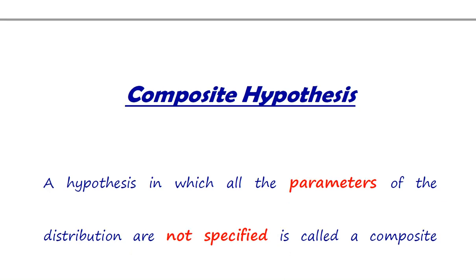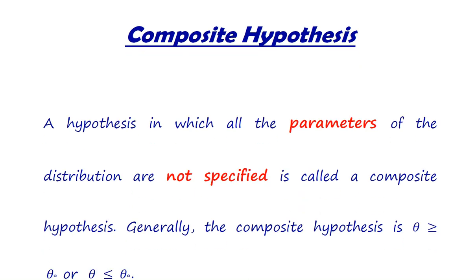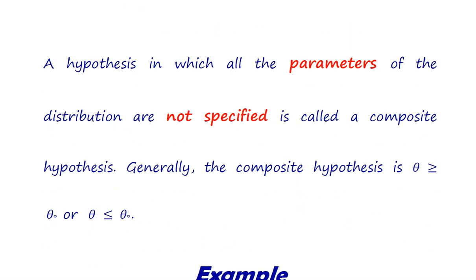Now we move towards composite hypothesis. A hypothesis in which all parameters of the distribution are not specified is called a composite hypothesis. Composite hypothesis is the inverse of simple hypothesis and mostly it represents the alternative hypothesis.